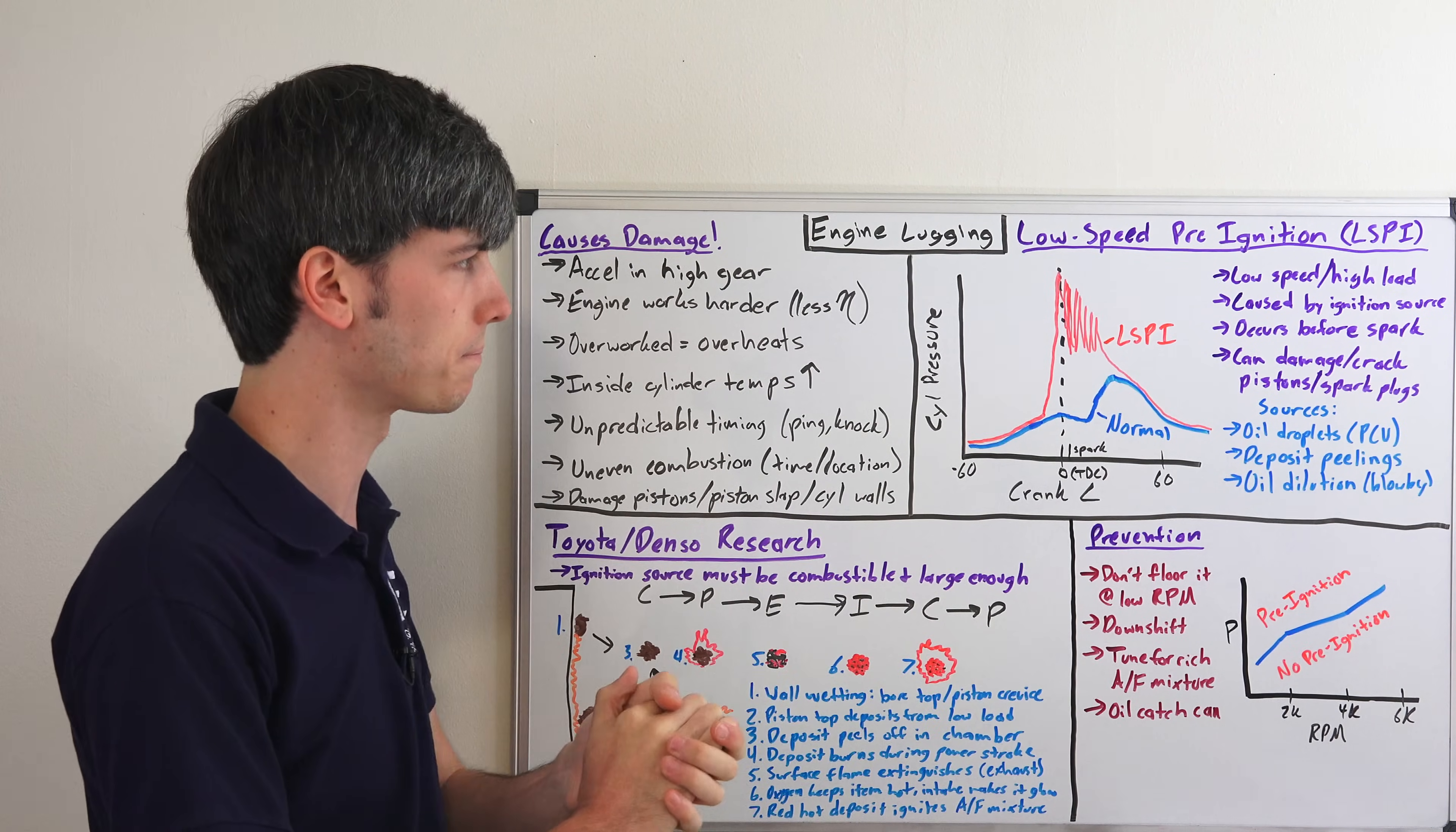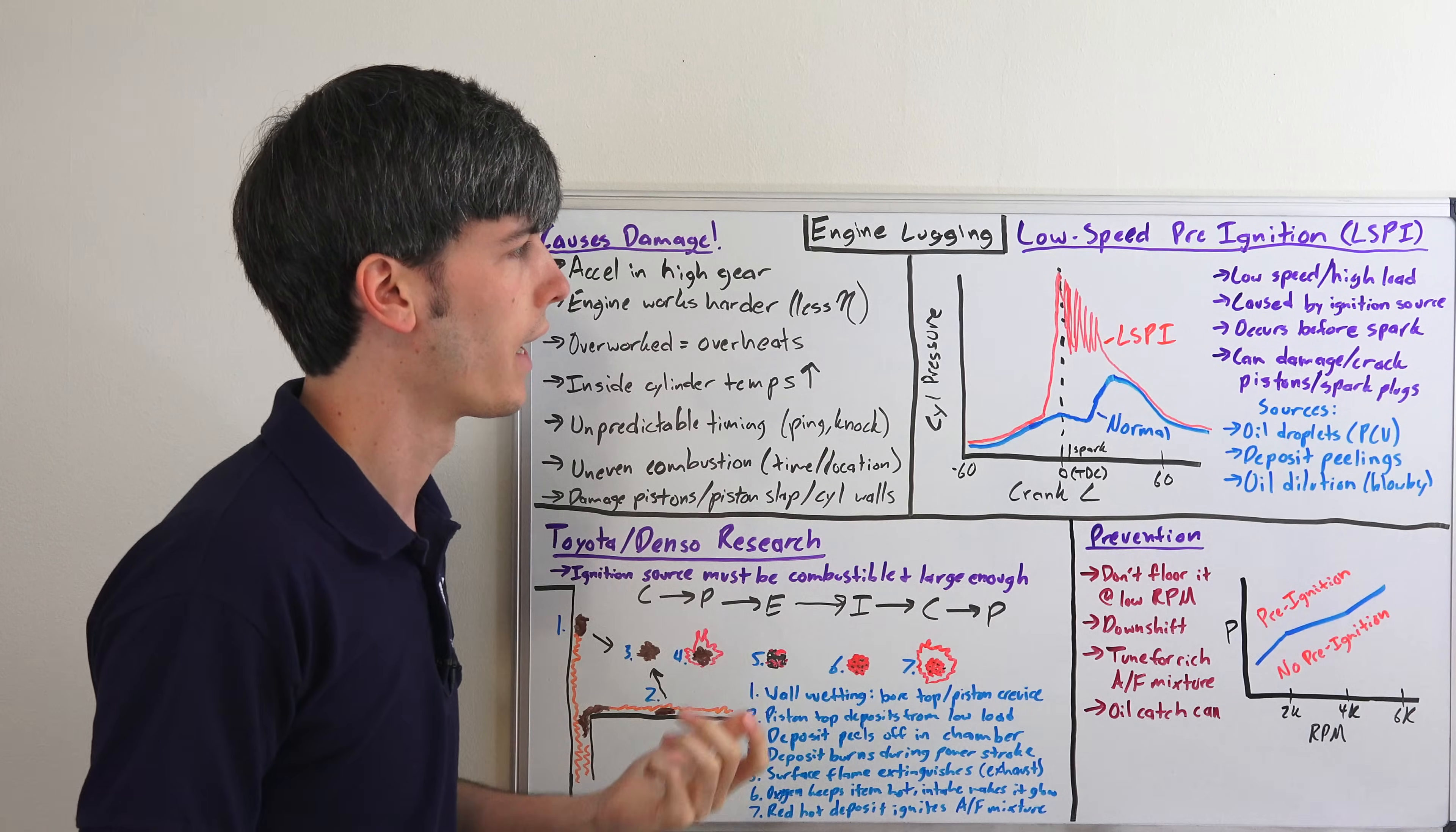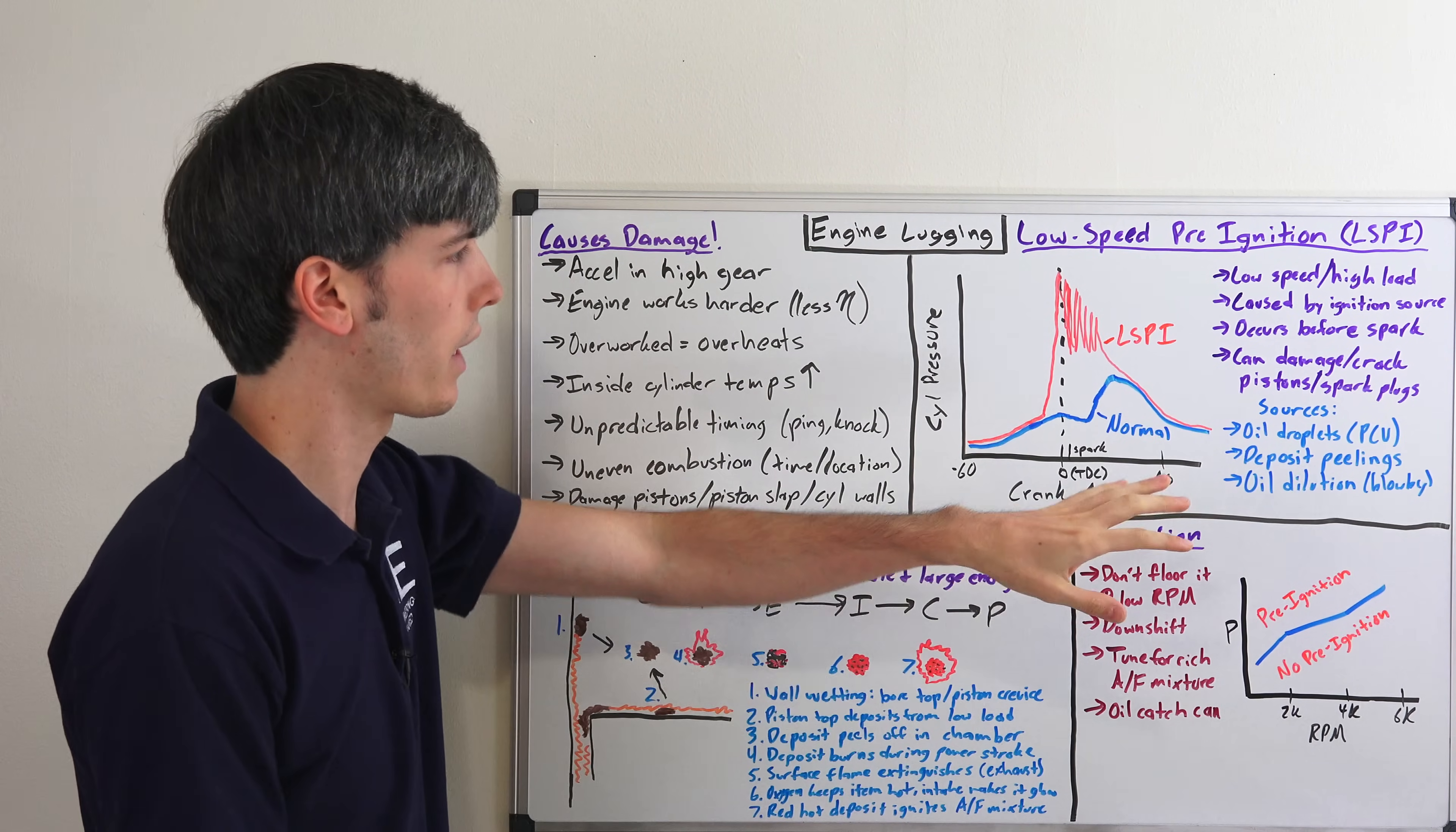It's caused by an ignition source and it occurs before the spark, so this means you can't use ignition timing to get rid of it. What this can do is damage and crack your pistons, damage your spark plugs, things like that. It can cause pretty detrimental impacts on your engine.